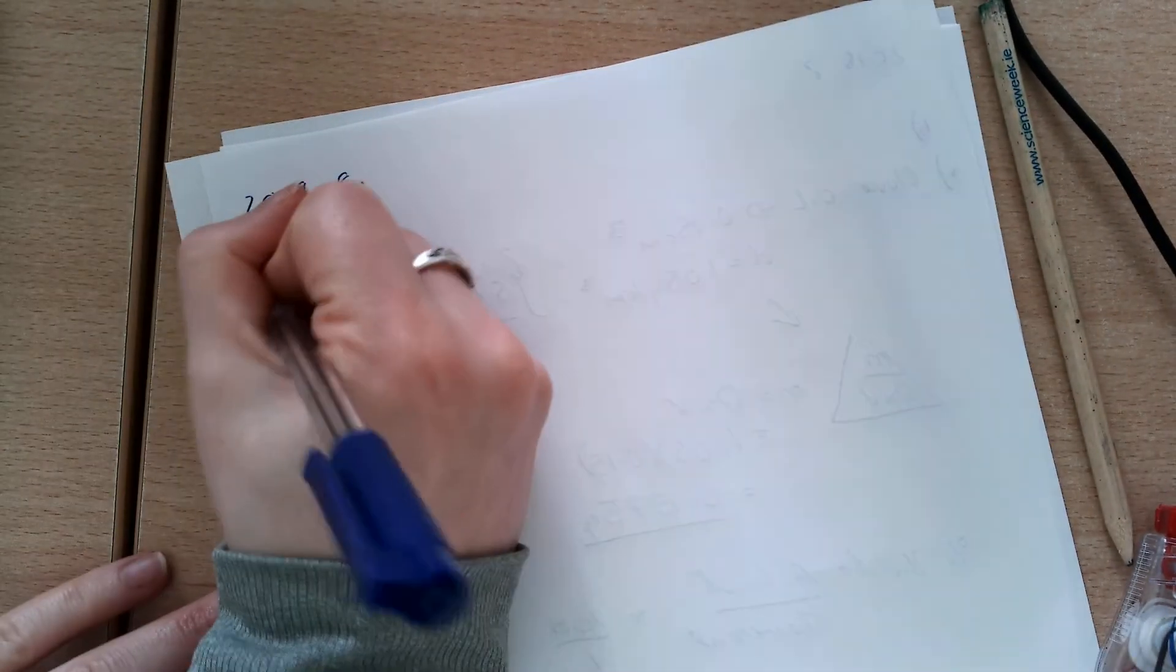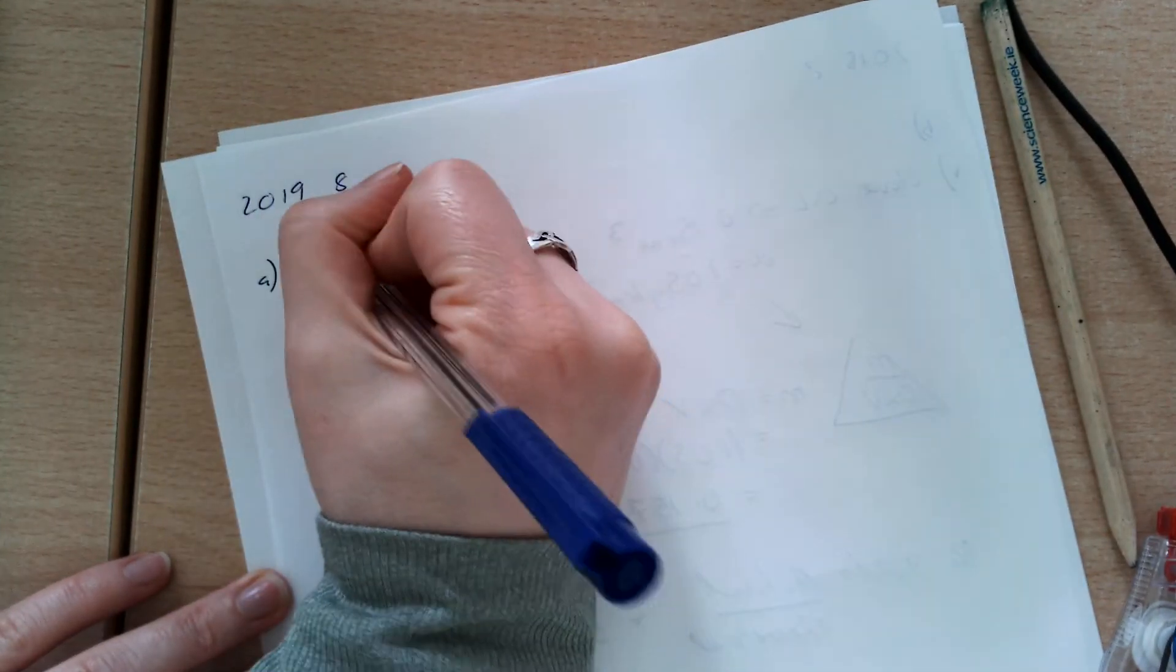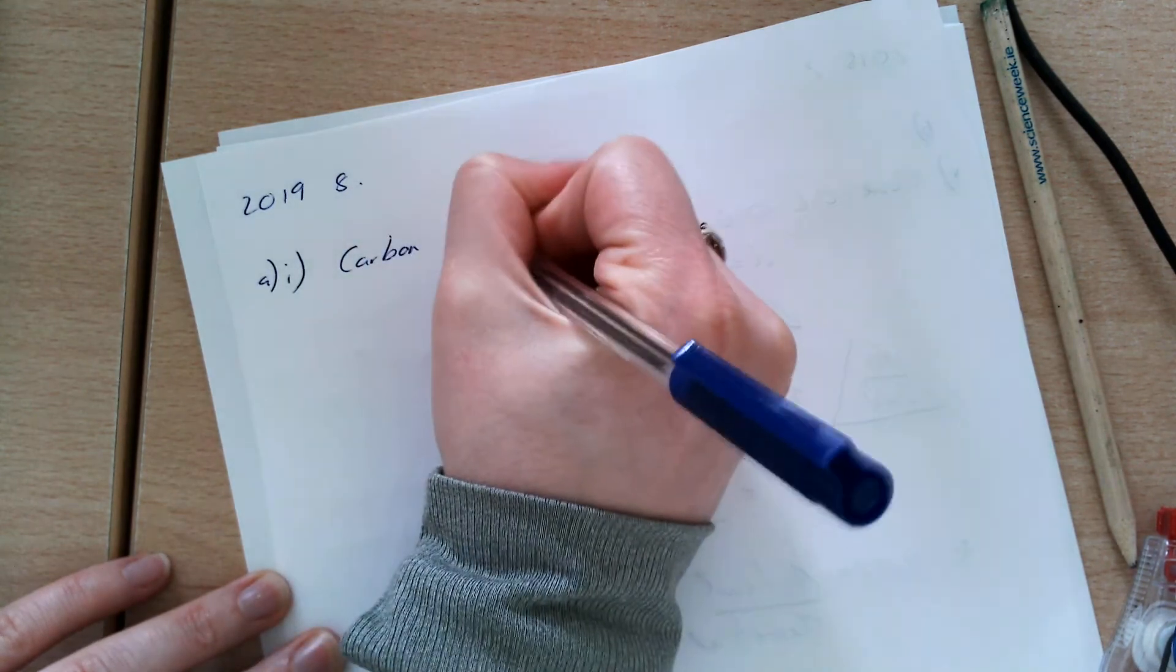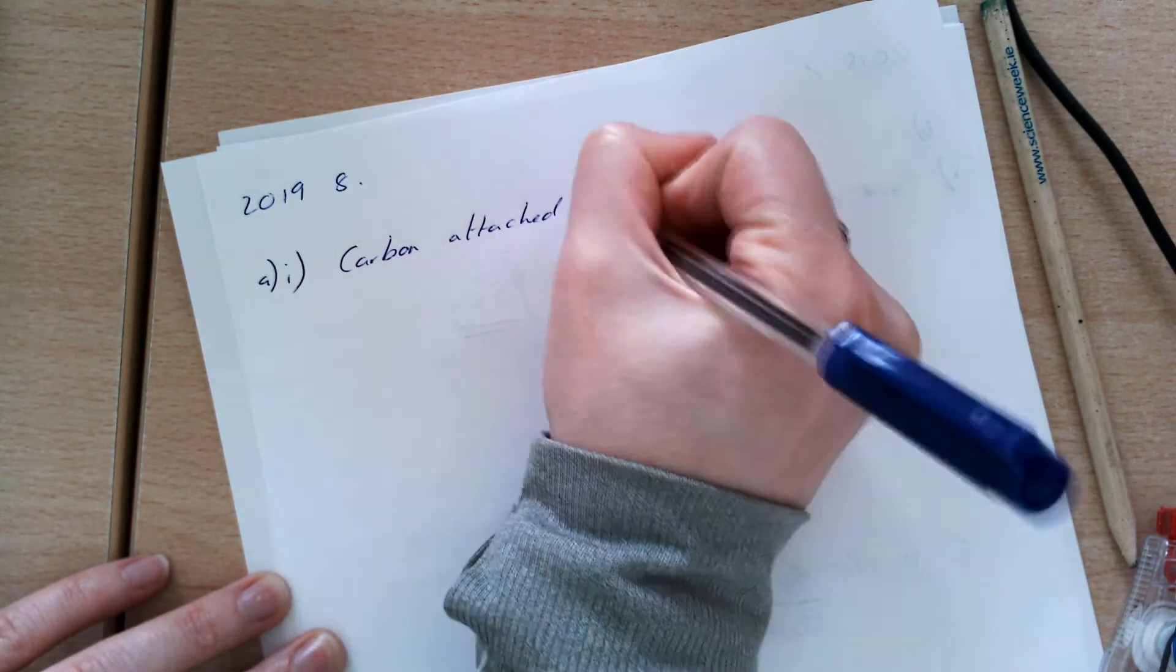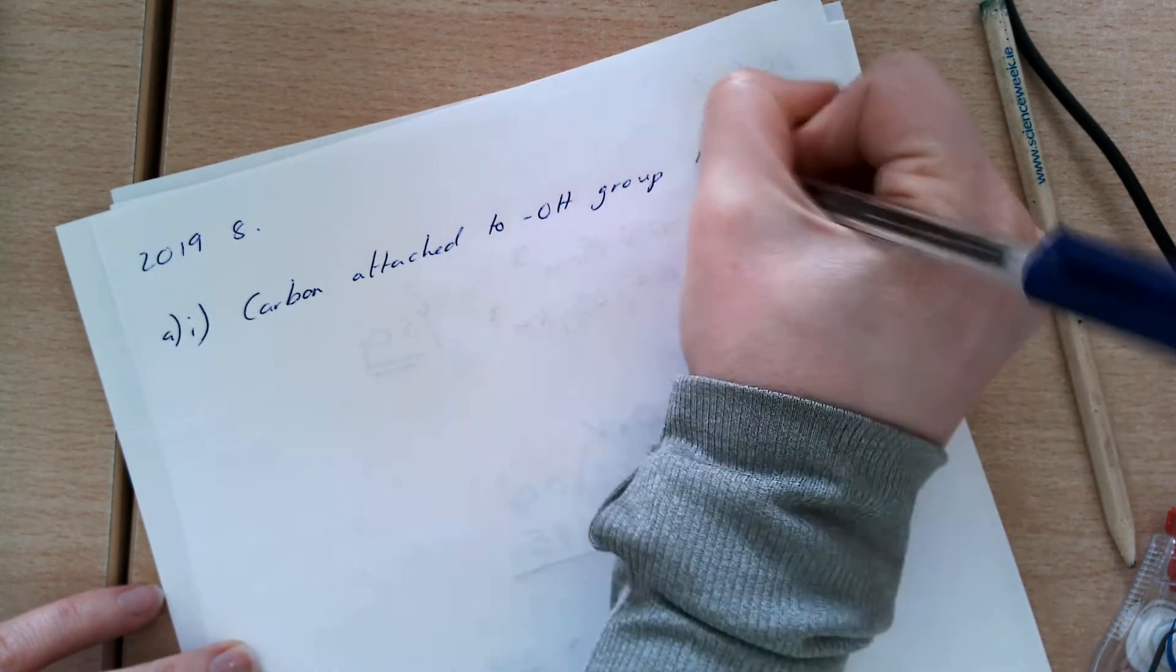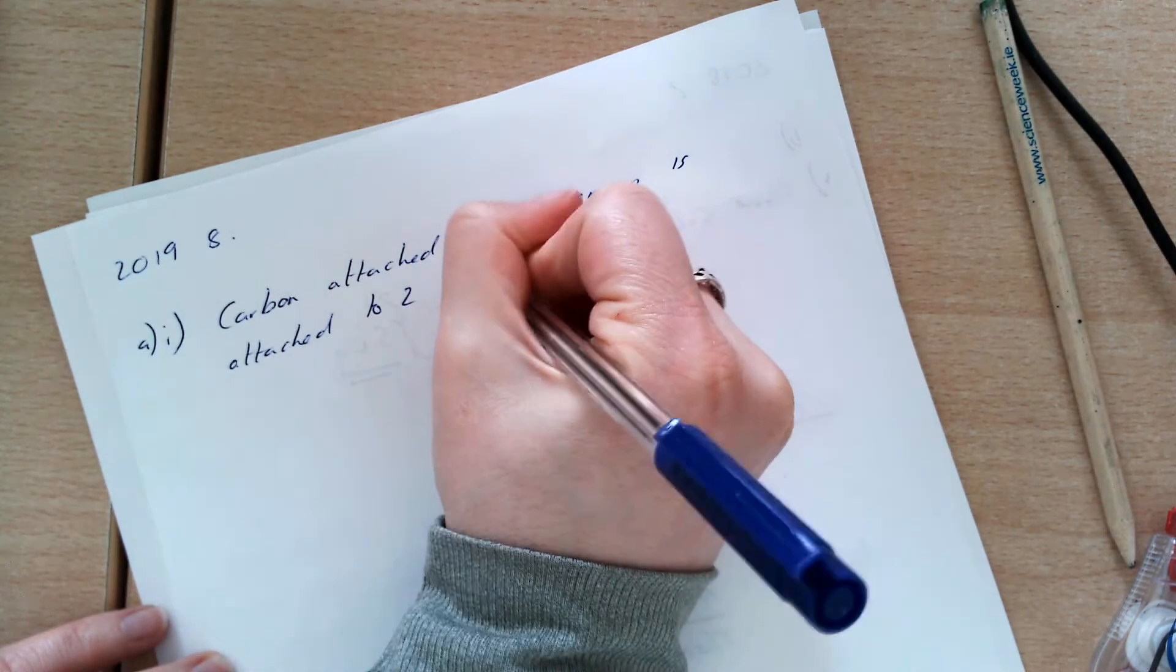Looking now at 2019, I'm going to do all of question 8. I got a good few questions on question 8, so I'm just going to do it all. Part I asks about a secondary alcohol, so the carbon attached to the OH group is attached to two other carbons.